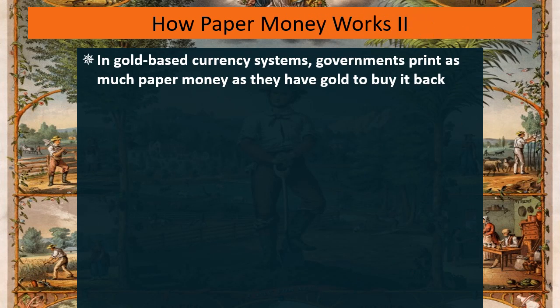Now let's imagine that we have a gold-based system. Gold-based systems don't fluctuate in value as much, because a government can print as much paper money as it has gold to buy it back — or it can print less.